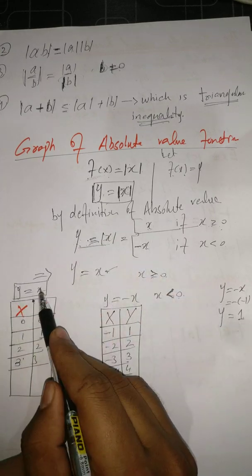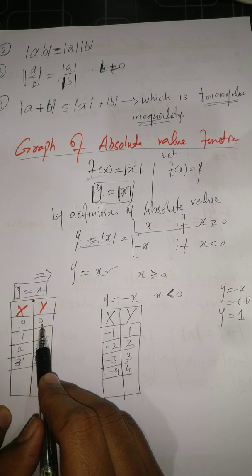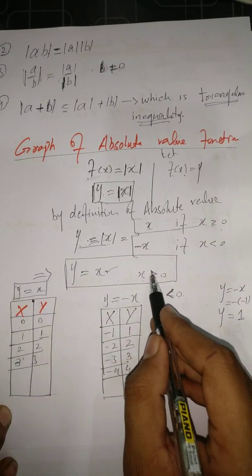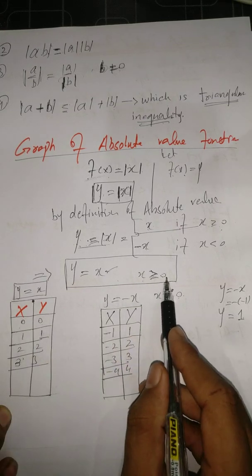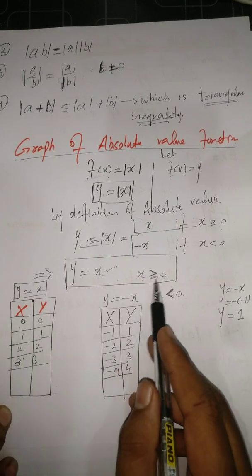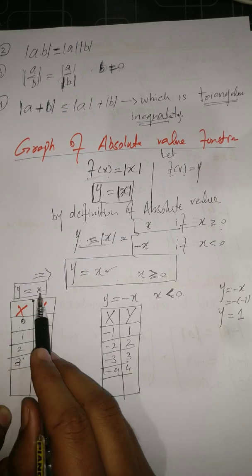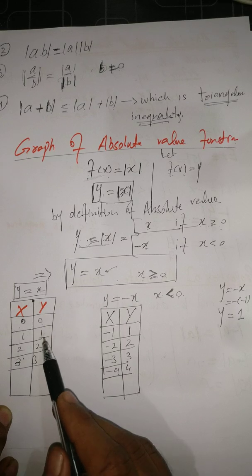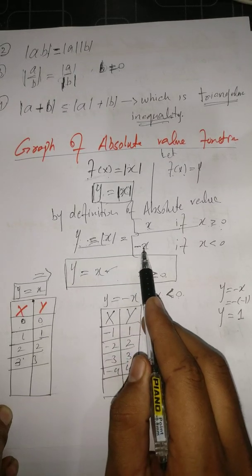To draw the graph, we make a table. For the first part of the definition, y = x, and the input values should be greater than or equal to 0 — no negative values, since zero is included. When we put 0, the output is also 0; when we put 1, the output is 1; similarly for 2, 3, and so on.